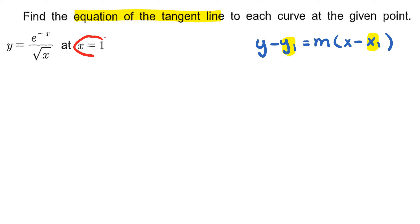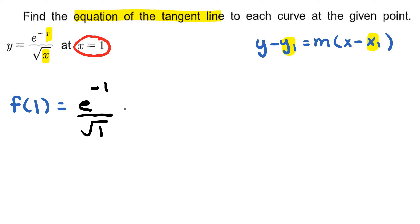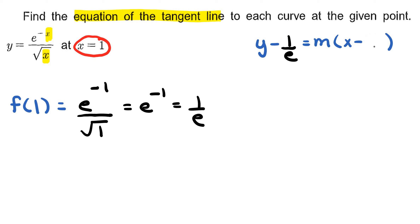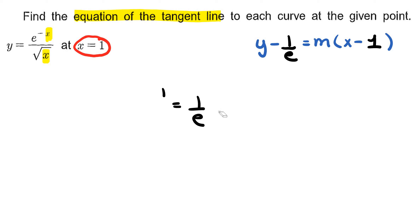I know that my x value is 1, and if I want to find the corresponding y value, that's the same thing as computing f(1). f(1) basically means anytime you see x in the original function you just replace those with the value of 1, so e to the power of negative 1 divided by the square root of 1, and this is simply going to be e to the power of negative 1, which is just 1 over e. Now I can update my tangent line here, so this will be y minus 1 over e, and my x value is 1.